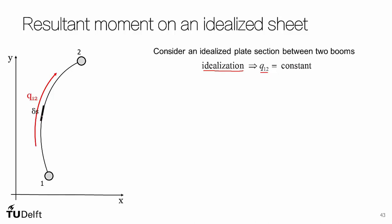We will again define an element ds, and instead of showing Q12, I'm going to show the resultant force Q12 times delta s acting on this element. This is because for moments we multiply the resultant force on that element by a moment arm, which helps with visualization.